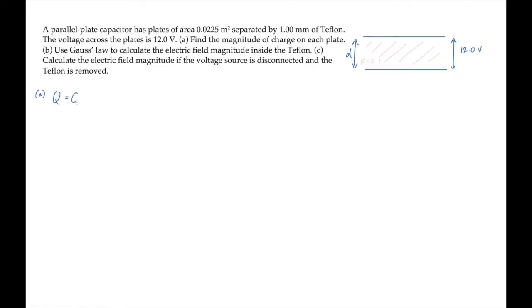That's the capacitance times the voltage. The capacitance of this parallel plate capacitor is K, the dielectric constant, times epsilon naught A over D. When we substitute that and calculate, we find there is 5.02 nanocoulombs of charge on each plate.